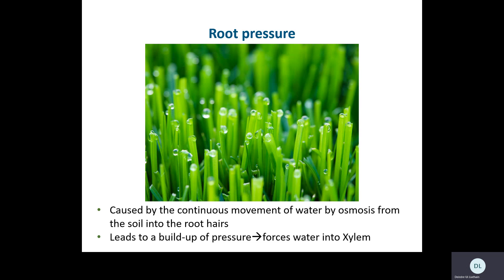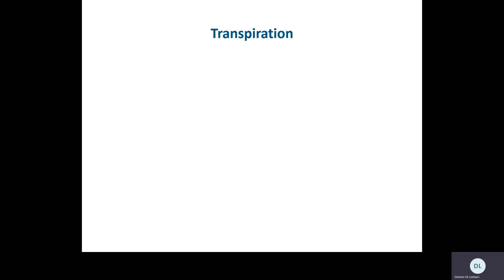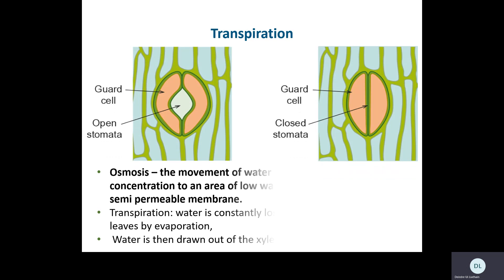Osmosis occurs across a semi-permeable membrane. The root hairs are surrounded by soil water with a high concentration of water. Water naturally moves from the soil water across the cell membranes and cell walls of the root hairs, building up pressure — a column of water that forces water up through the xylem. That's one force pushing water through the plant, but it's not strong enough to get water all the way to the very top on its own.